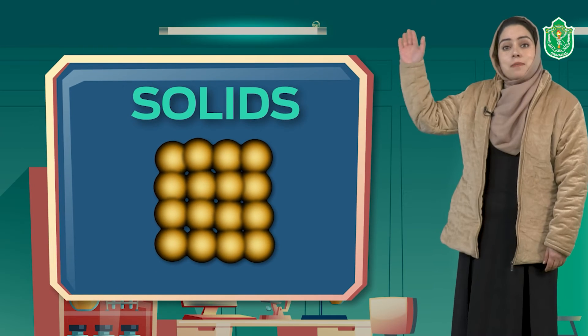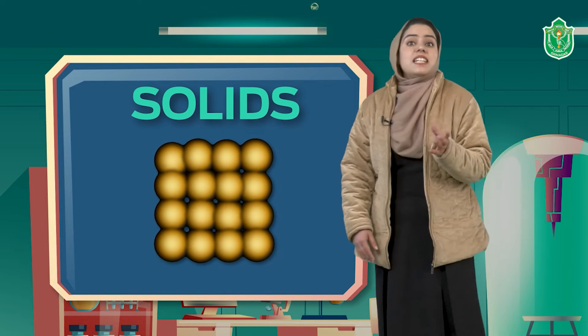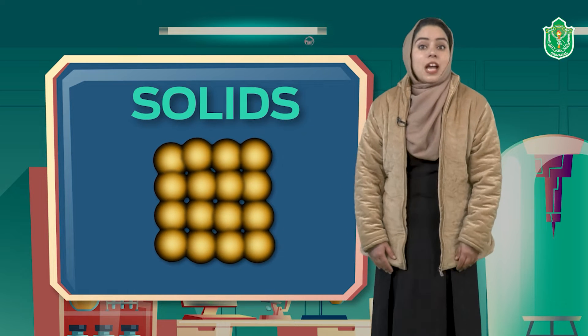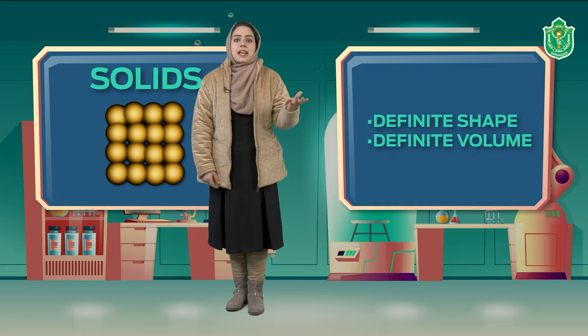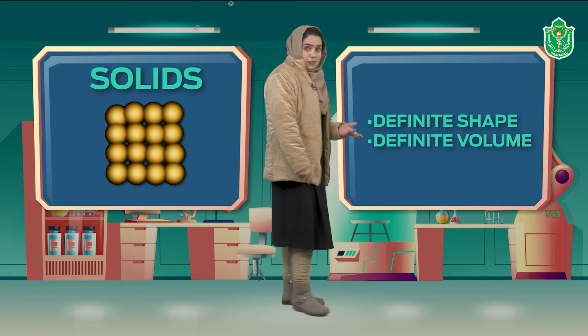Solid: particles in a solid are tightly packed, they are very close to each other. There is a strong molecular force of attraction among them, so they have a definite shape and definite volume. For example, your wooden box — if you place it in a cupboard or in your drawer, its shape will not change. Similarly, if you put this wooden box anywhere, it is going to take up the same amount of space.